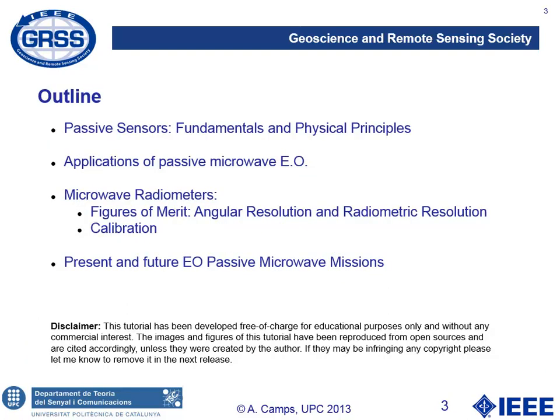The outline of this presentation is the following. First, we will revise the fundamentals and physical principles of passive sensors. Then, we will review the applications of passive microwave earth observation. We will define the figures of merit of microwave radiometers, mainly the angular resolution and the radiometric resolution, and explain some details on how calibration of these instruments is performed. Finally, we will present the present and future of earth observation by means of passive microwaves.